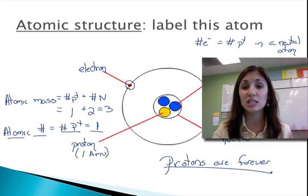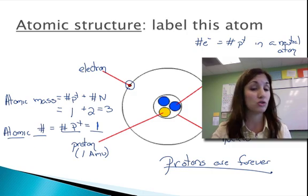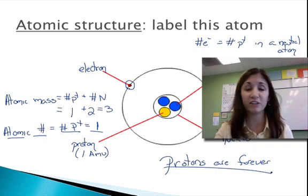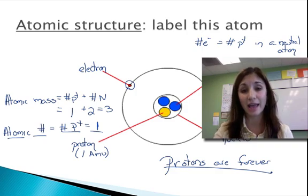Protons are forever. Therefore, the atomic number is forever. It defines the atom. Neutrons come and go. Electrons come and go. They're fickle things. Protons are forever. They define the atom.